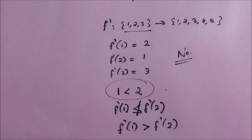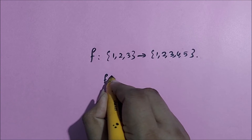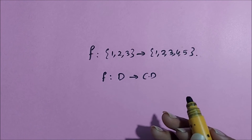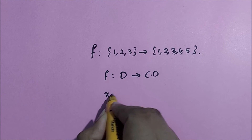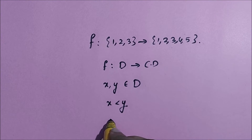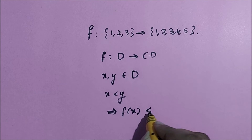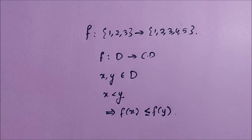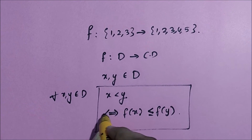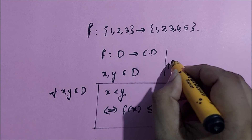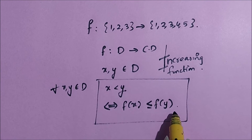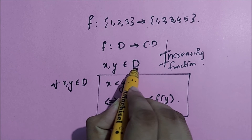So let f be a function from a domain set to a co-domain set. If you take any two elements x, y belonging to the domain, and if x is less than y, it should be the case that f(x) is less than or equal to f(y) for all x, y belonging to the domain. If and only if this holds, we say that f is an increasing function. This should hold for any two values x and y belonging to the domain.